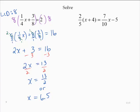Moving on to the second equation. 2/5 times the quantity x plus 4 is equal to 7/10 x minus 5. First, let's apply the distributive property to remove the quantity on the left-hand side. So we would have 2/5 times x plus 2/5 times 4 is still equal to 7/10 x minus 5.